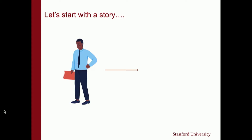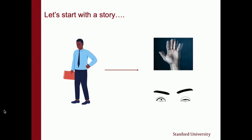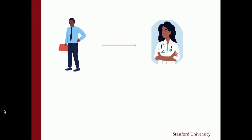All of a sudden, he starts to notice some double vision. He looks at his hand and sees double. Then one of his colleagues comes up to him and says, hey Bill, I noticed that your left eye is drooping. As would be expected, Bill is a little bit stressed out, so he makes an appointment with his primary care doctor.